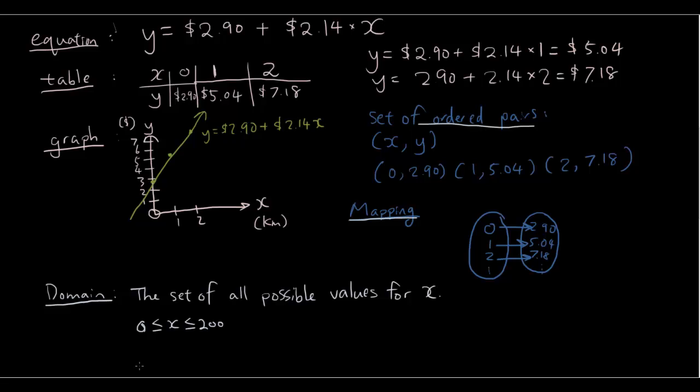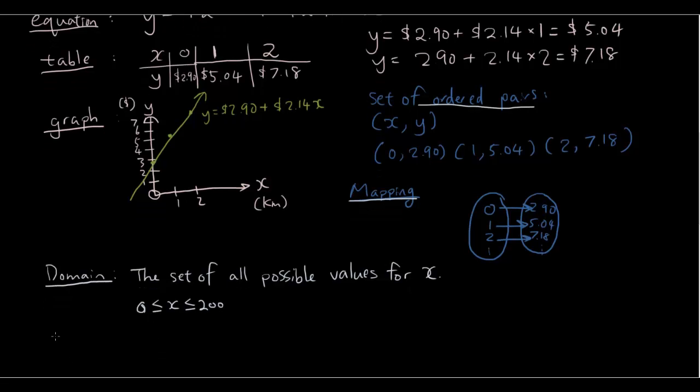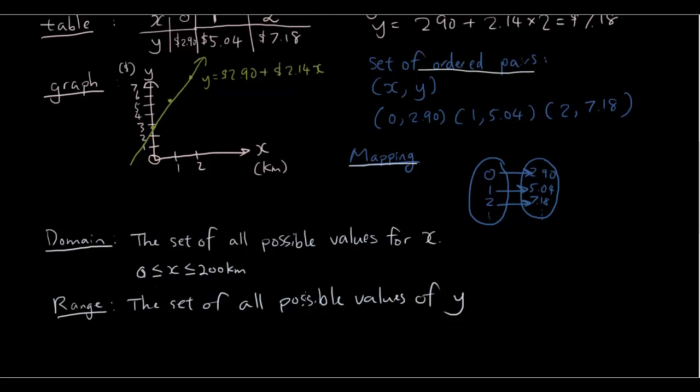Okay. And the range is the y values. The range is the set of all possible y values. So, that was in kilometers. So, let's just say, well, obviously we know that you're going to have to pay at least $2.90.